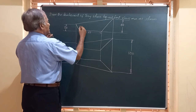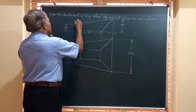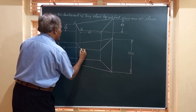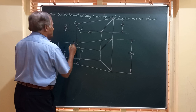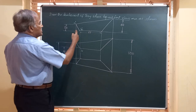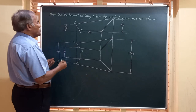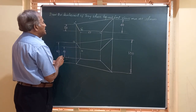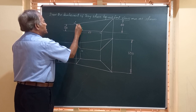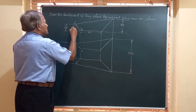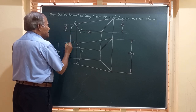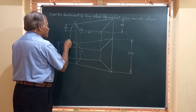I will call this edge a-dash b-dash in the front view, and the corresponding top view I will represent as AB. The front view is a-dash b-dash; AB is the top view. None of these are parallel to XY, and hence to obtain the true length of this edge, I take center b-dash with radius equal to b-dash a-dash and strike an arc till here, then bring it downwards to meet the locus of A.